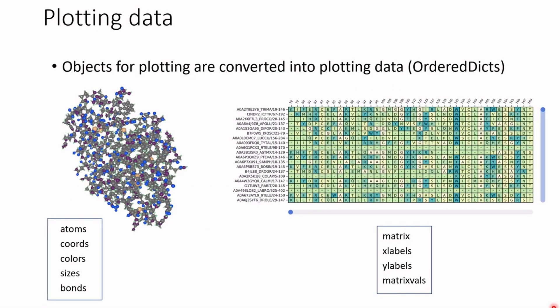The way that these plots are made is that the objects like a protein structure are converted into plotting data, and then this plotting data is what's actually used to construct the plot.